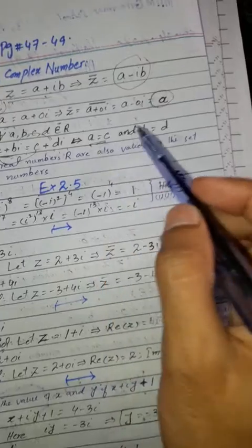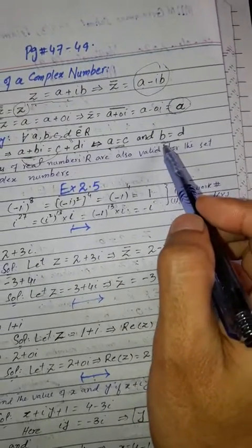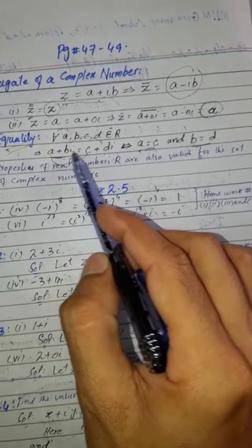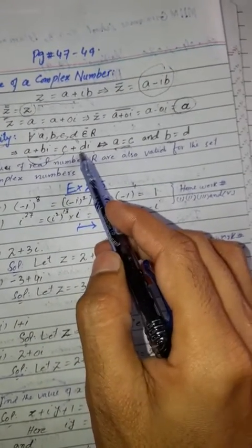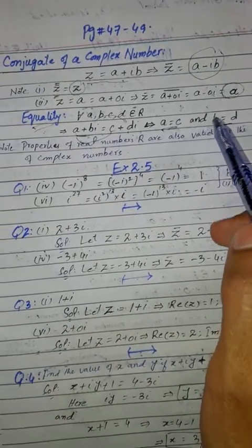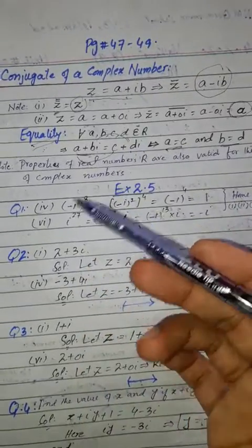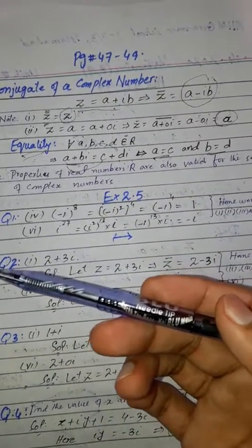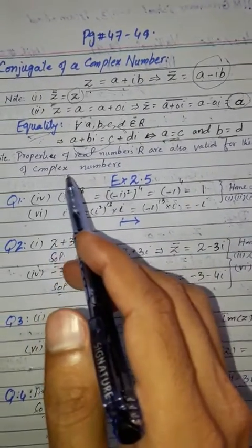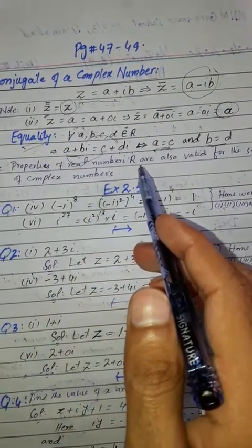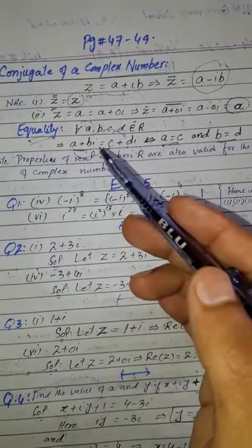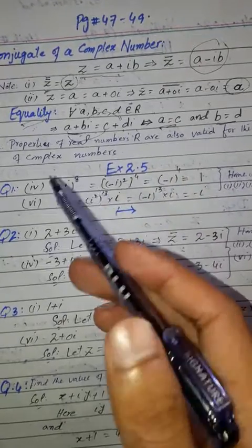For equality of complex numbers: if A plus B iota equals C plus D iota, then the real parts are equal (A equals C) and the imaginary parts are equal (B equals D). All properties of real numbers are also valid for complex numbers.